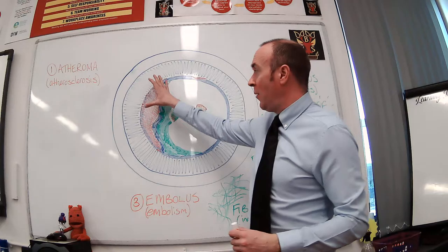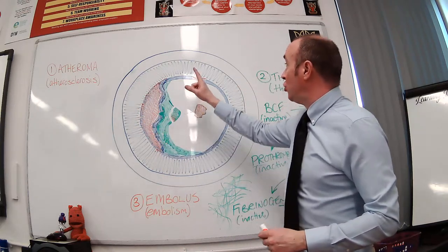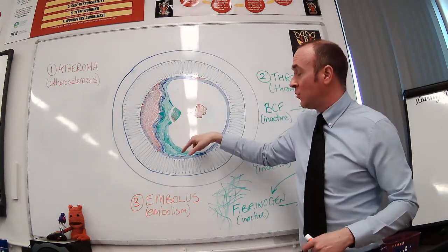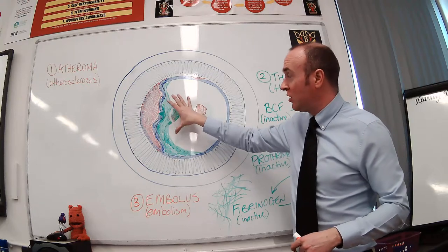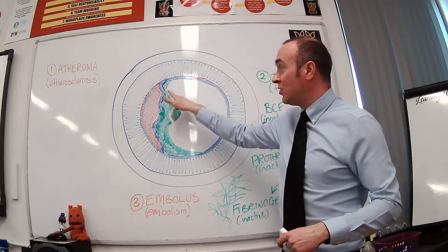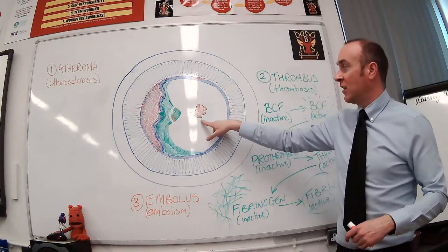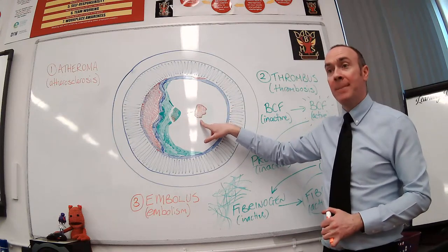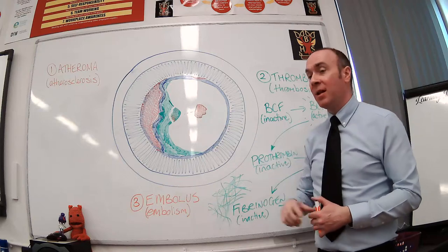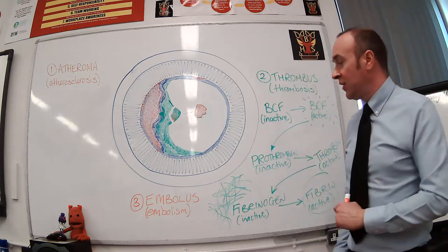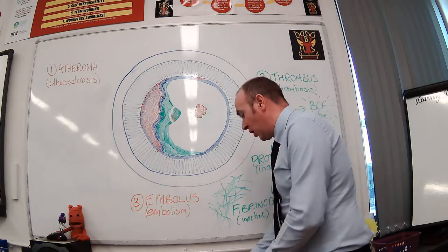So that's the progression. We go from an atheroma, which is a plaque underneath the endothelium, to a thrombus, which we call thrombosis, which is an actual blood clot formed from damage eventually that happens to the endothelium. And then if a bit of that thrombus breaks off and starts to move through the body, we call it an embolus, the condition being an embolism. So that's cardiovascular disease in a very, very quick nutshell.